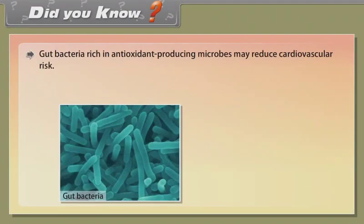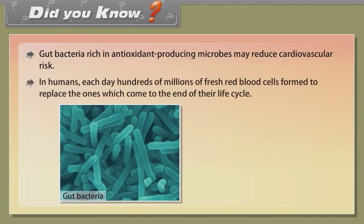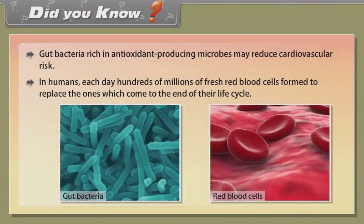Did you know? Gut bacteria rich in antioxidant-producing microbes may reduce cardiovascular risk. In humans, each day hundreds of millions of fresh red blood cells form to replace the ones which come to the end of their life cycle.